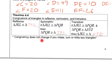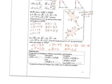Congruency does not change if you rotate, turn, or slide two triangles. It looks like this triangle was rotated to get to the one down here, and they're still congruent. We could flip them, turn them, rotate them — and they will still be congruent.